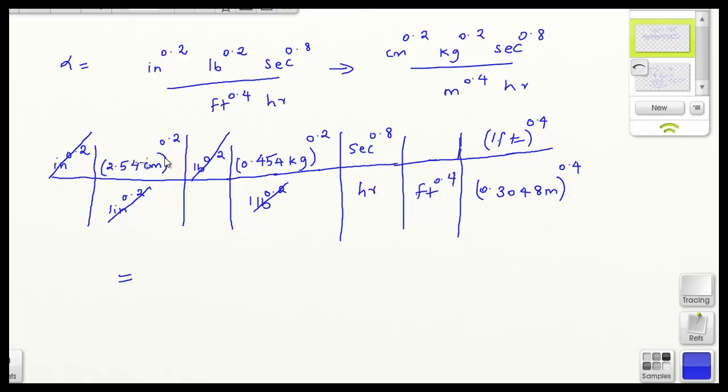So when I pool all of these together, take the power of all the numbers, what I would get should be equal to 1.655 in the new units. Centimeter to the power of 0.2, kg to the power of 0.2, second to the power of 0.8 divided by meter to the power of 0.4 and hour. And this is the unit of our new alpha. And if we multiply this by the old alpha, which was 16.6, then we get the new heat transfer coefficient in terms of the new unit, which is 1.655 multiplied by 16.6, and then this whole thing here. So that will be the new heat transfer coefficient.